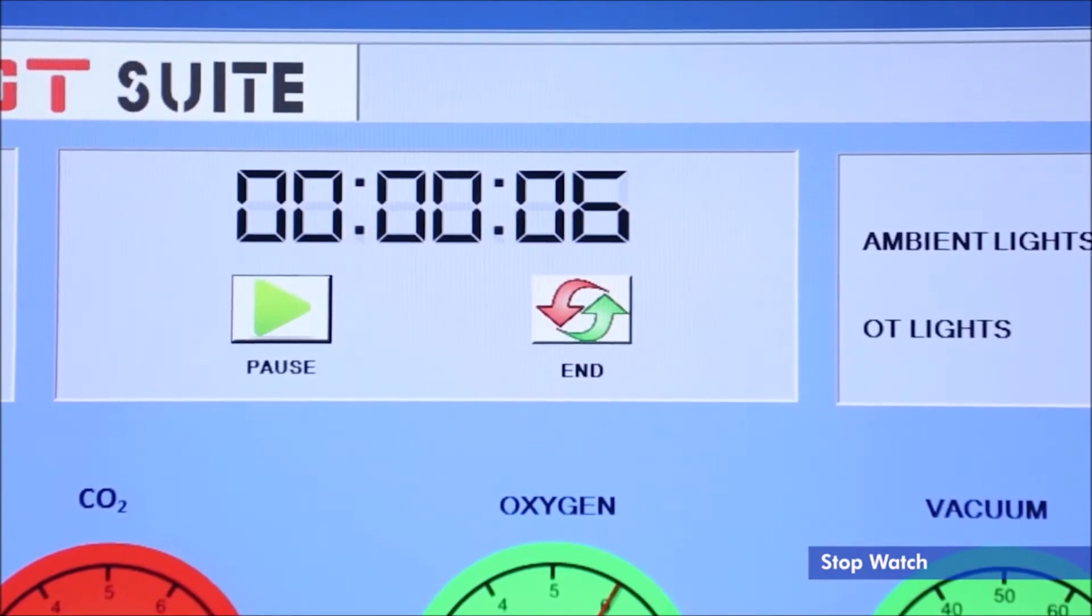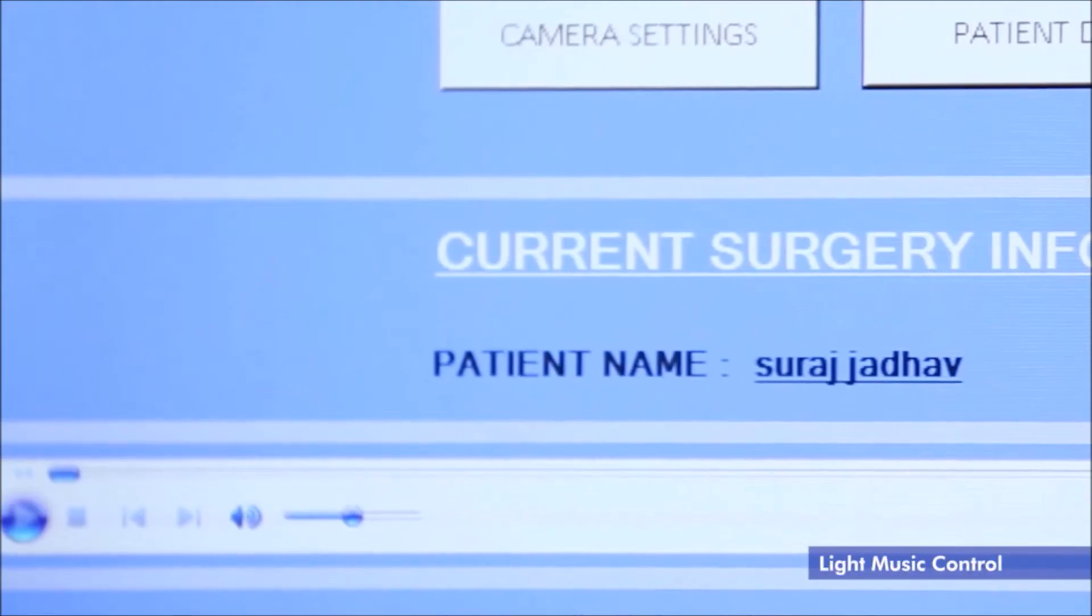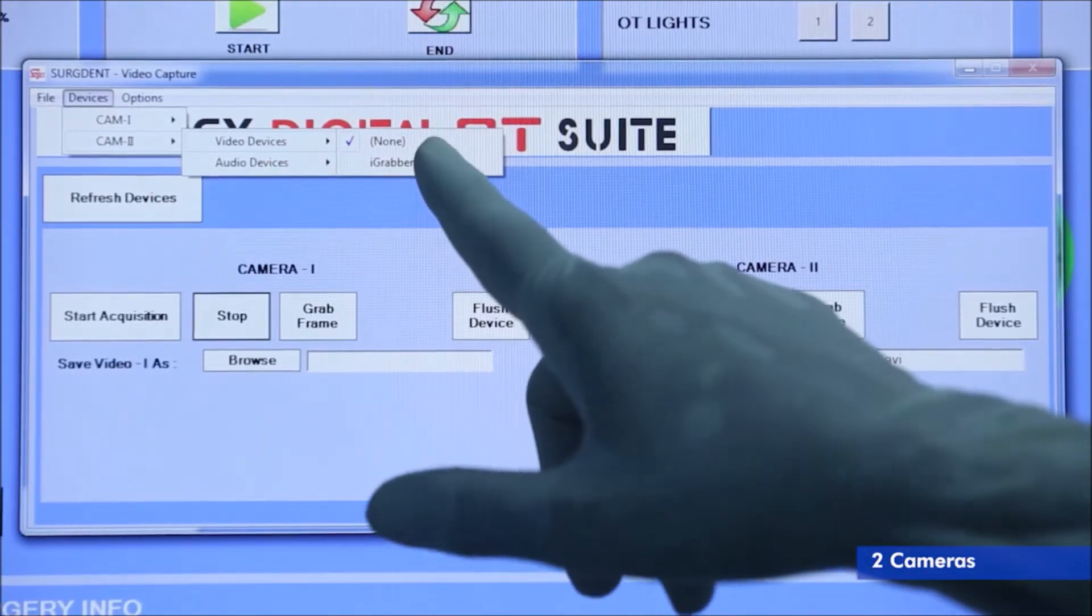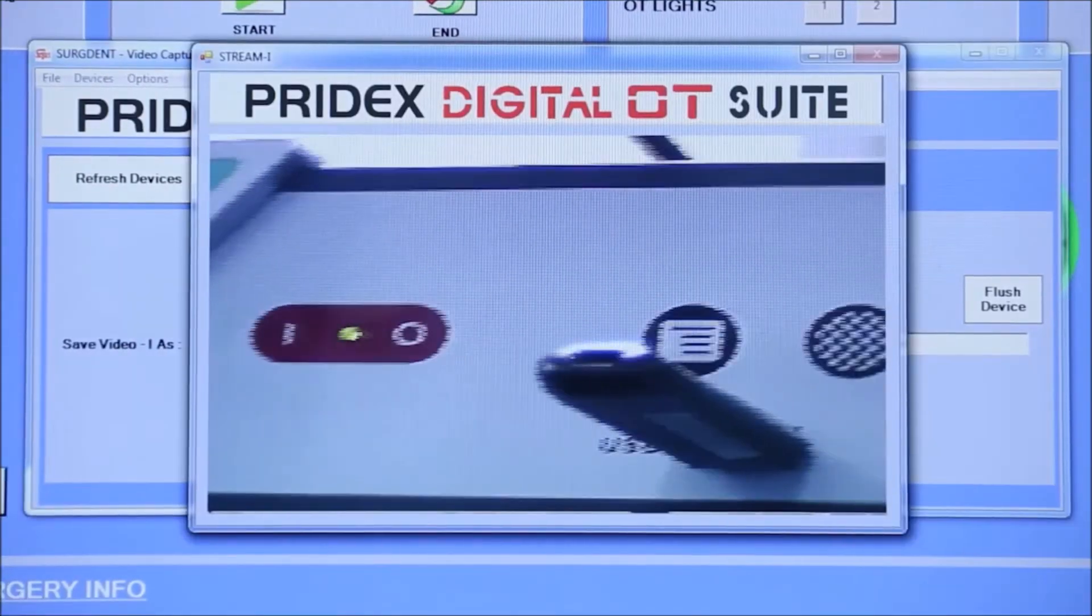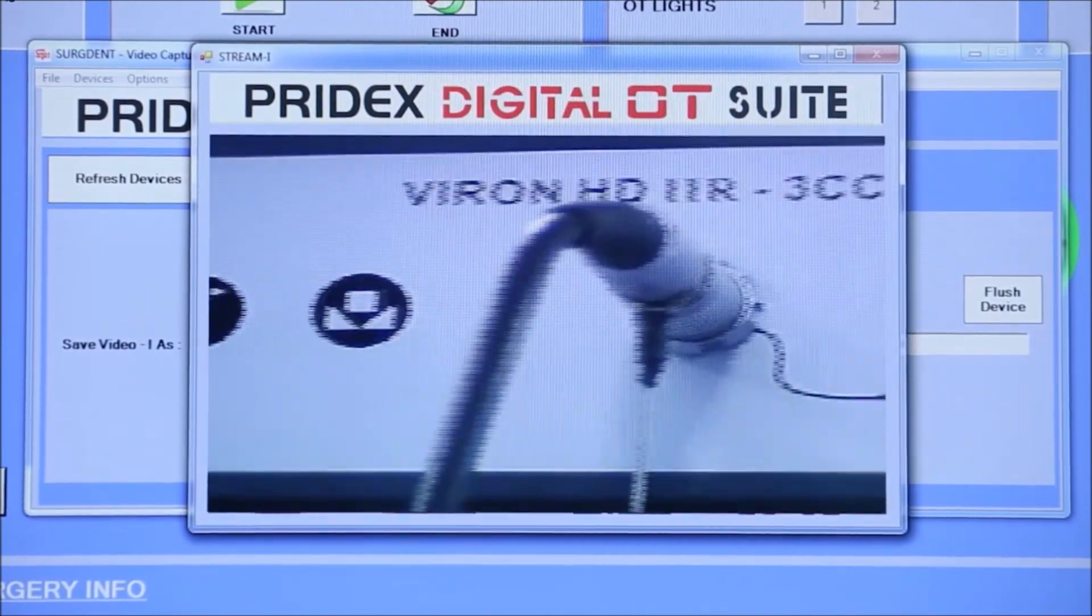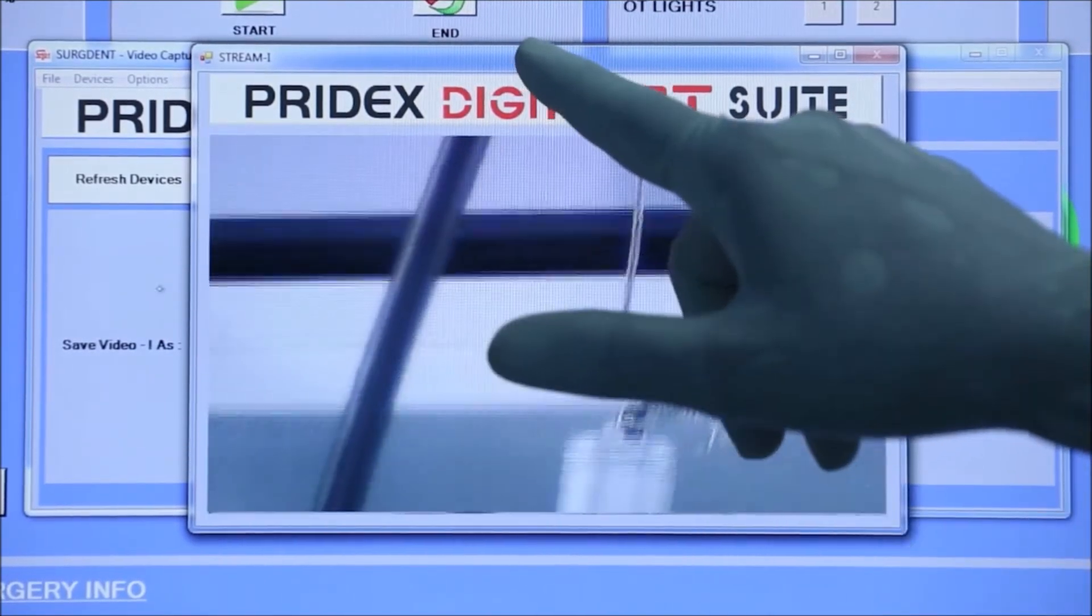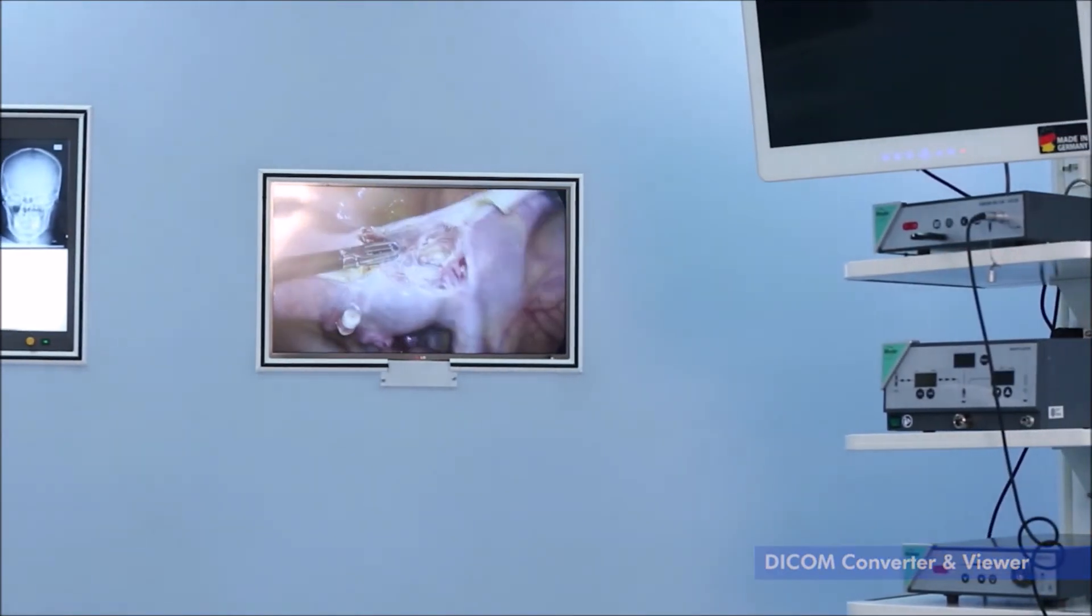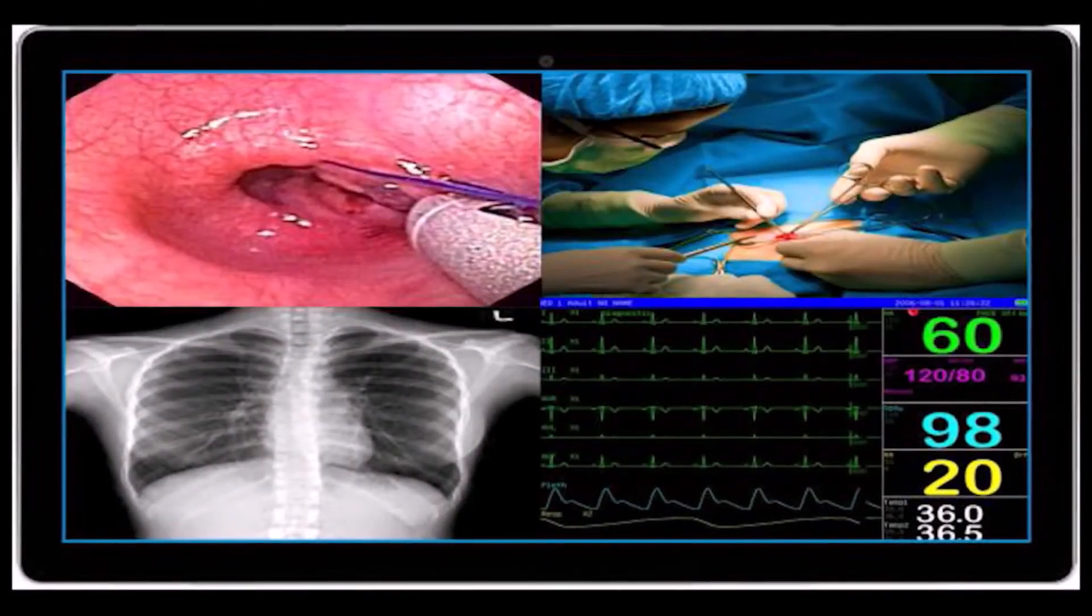Surgery recording system and wall monitors. Two cameras are provided for simultaneous recording. Recording can be done in full HD, integrated with hospital LAN network, DICOM converter and viewer. Wall monitors to show live surgery, split screen images, and radiology images.